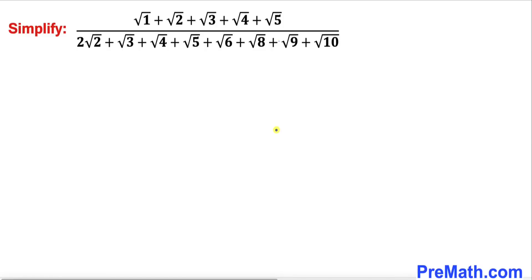Welcome to pre-math. In this video we are going to simplify a given rational expression that involves a bunch of radicals. In the numerator we have square root of 1 plus square root of 2 all the way to square root of 5, and likewise in the denominator we have 2 times square root of 2 plus square root of 3 plus square root of 4 plus square root of 5 plus square root of 6 plus square root of 8 plus square root of 9 and finally square root of 10.